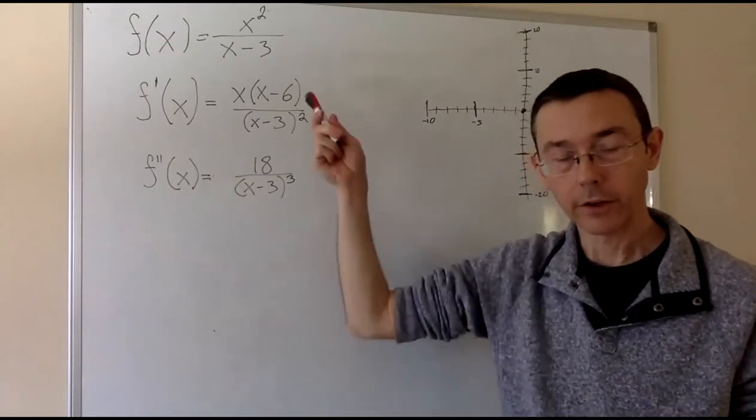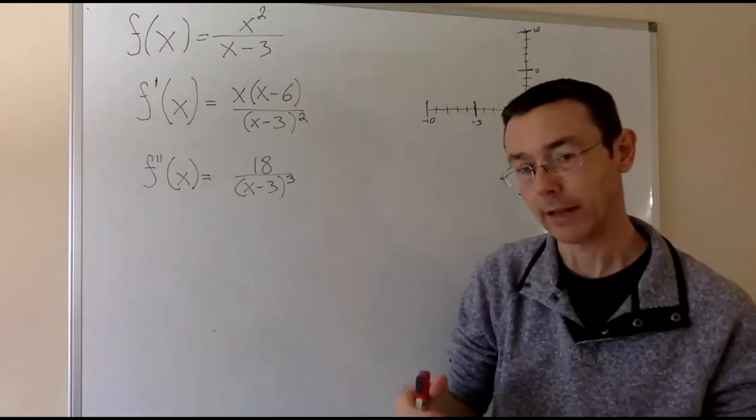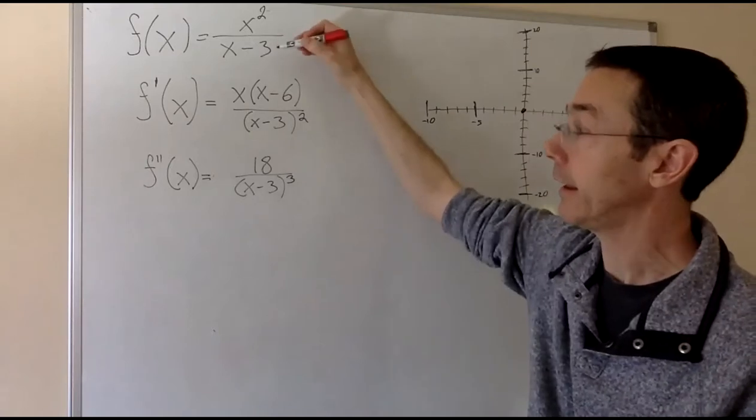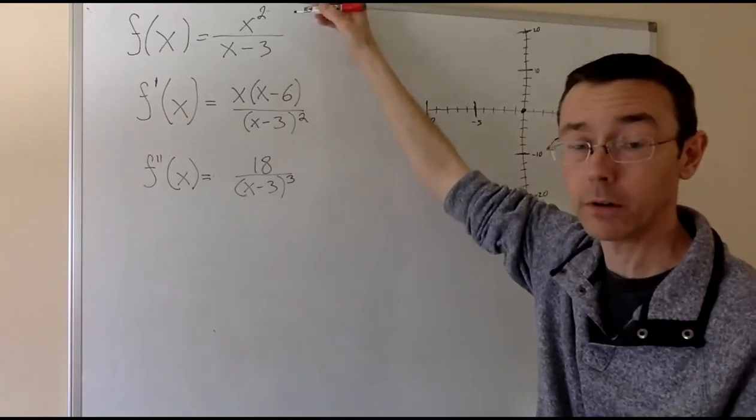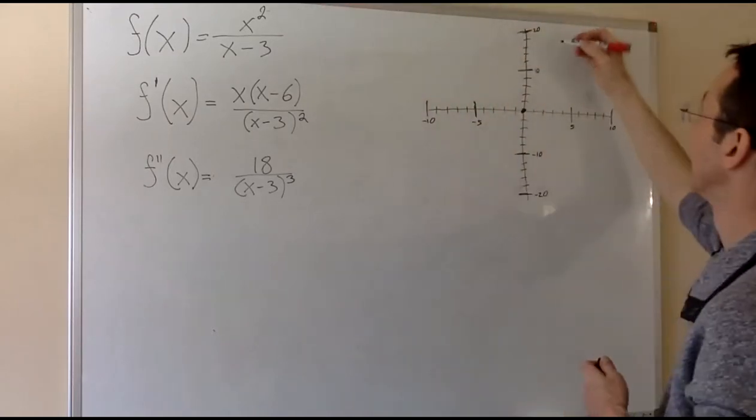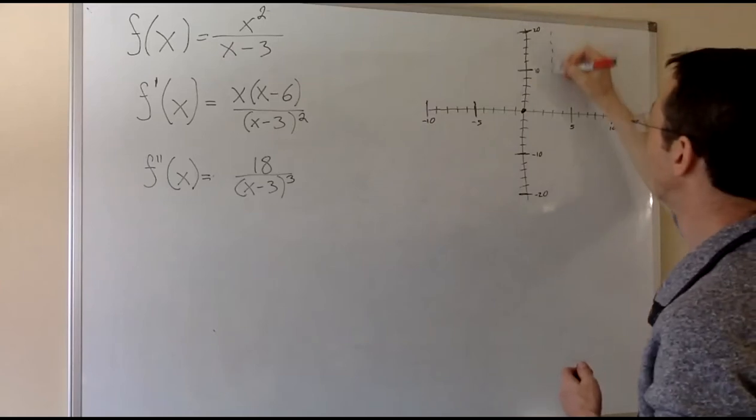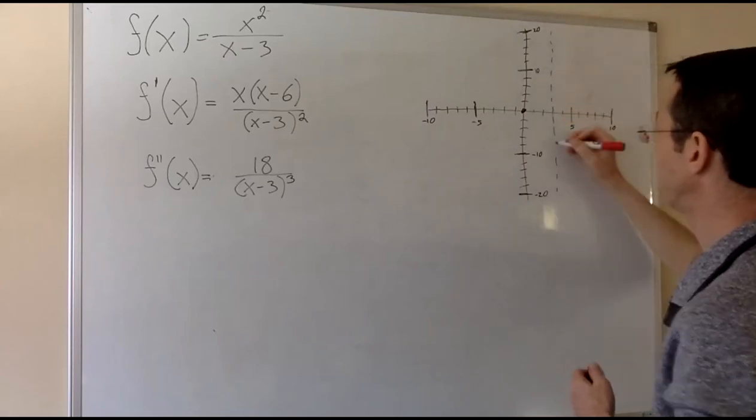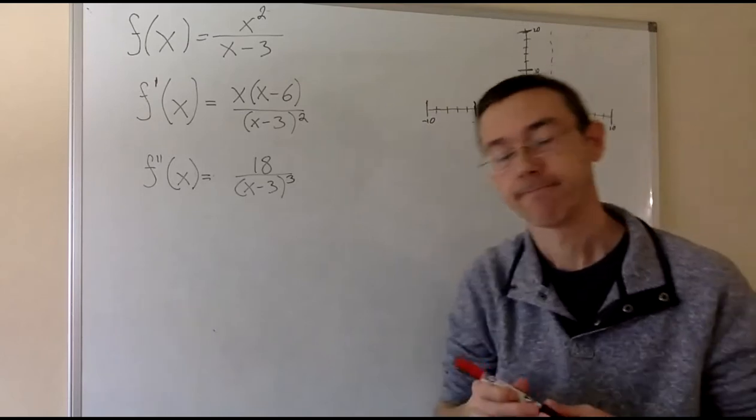The next thing I see looking at this function is that there's going to be a vertical asymptote at 3. At x equals 3, the denominator is 0, the numerator is not.